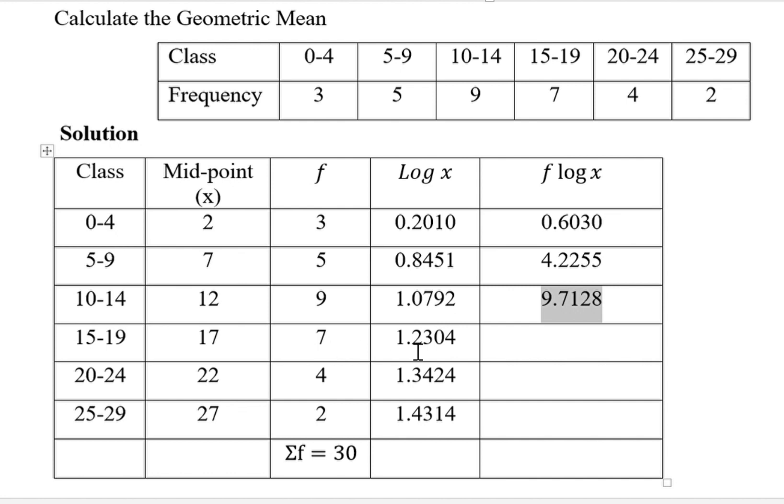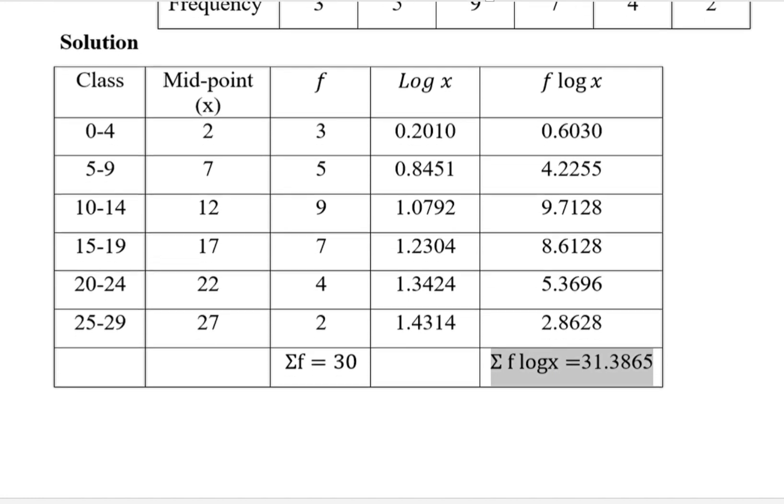7 times this, giving us this. 4 times 1.3424, giving us that. And 2 times this, giving us that. When we are done, we have to add this so that we get the total. That is what we have as summation f log x, which is 31.3865.